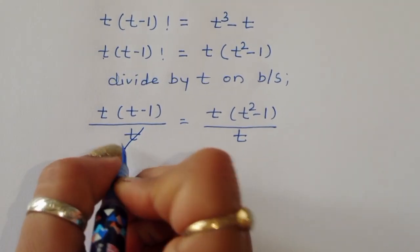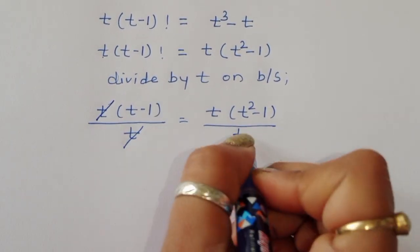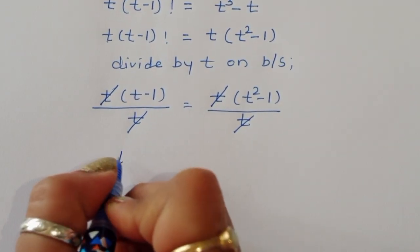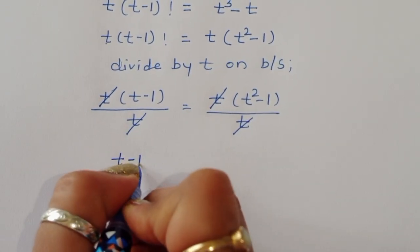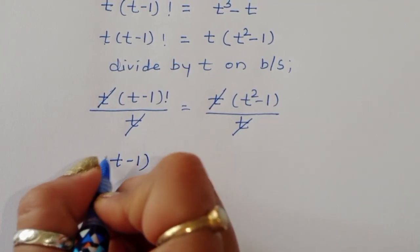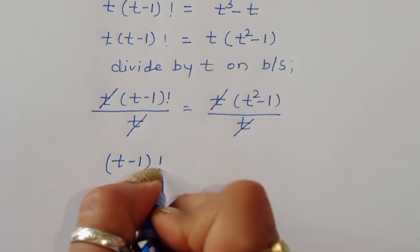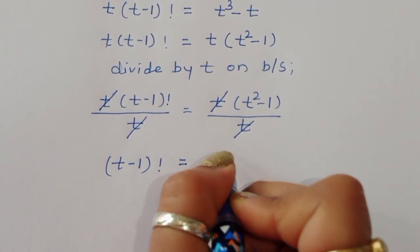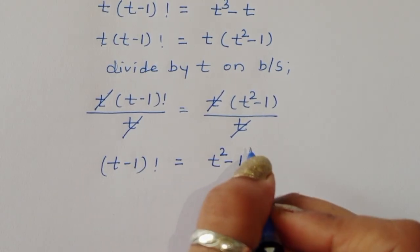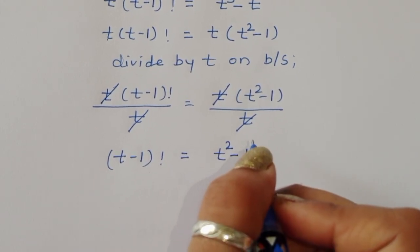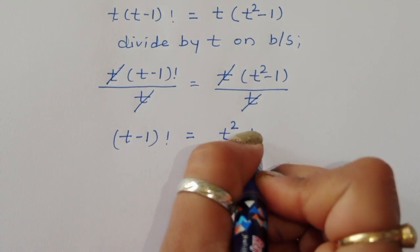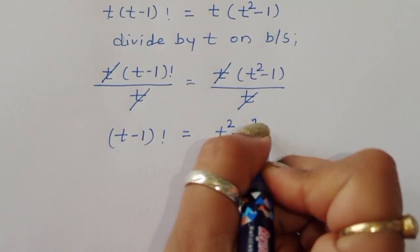The t cancels on both sides, leaving: (t minus 1) factorial is equal to t squared minus 1. We can write t squared minus 1 as (t minus 1) squared, but the value remains t squared minus 1.